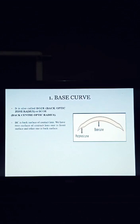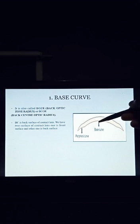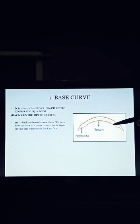Number 1: Base Curve. In a contact lens, we have two surfaces — one is the front surface and one is the back surface. This total back surface is the base curve of the contact lens. It is also called back optic zone radius or back center optic radius.